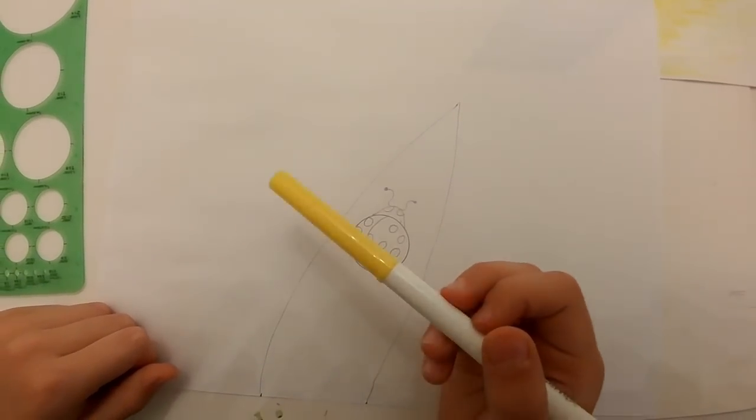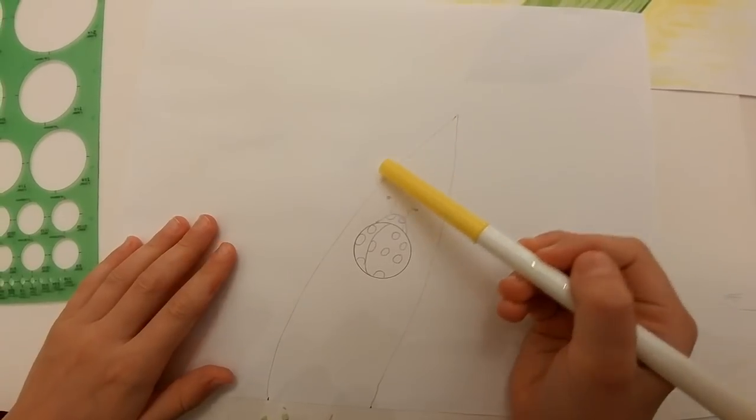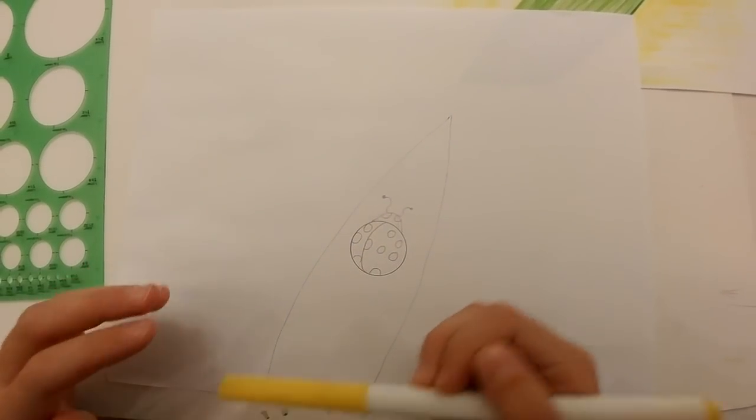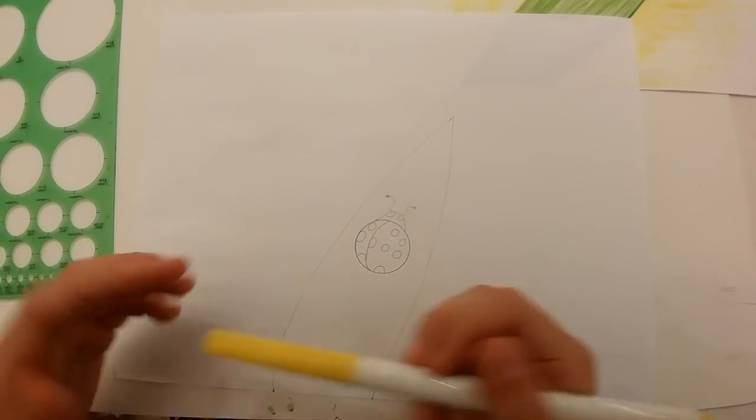First, let's color the background. Trace the leaf with yellow and color as much of the background as you want.